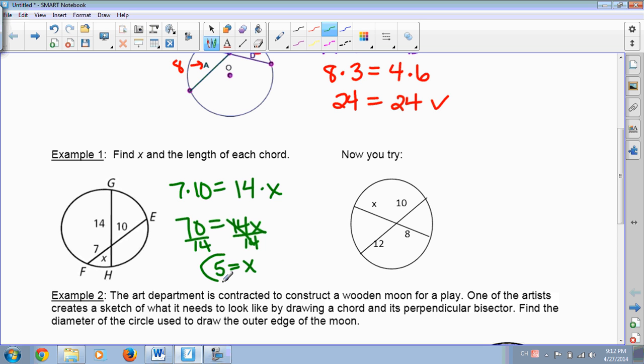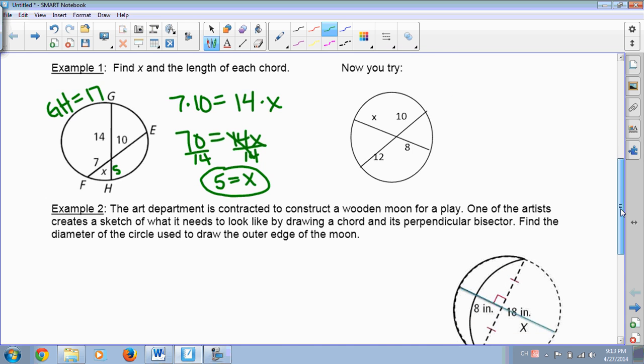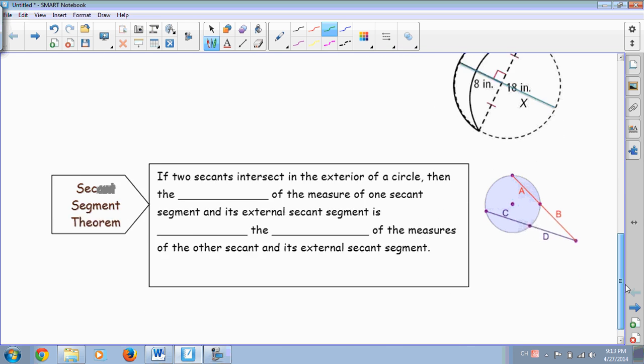So if X is 5, that means this length here is obviously 7 plus 10 is 17, and 14 plus 5. So if you have GH would be 19 long. Now the chords, when you add them together, won't be equal, but the product of the two segments will be equal. Okay, we're going to save the You Try This for class, and also example 2 for class as well.